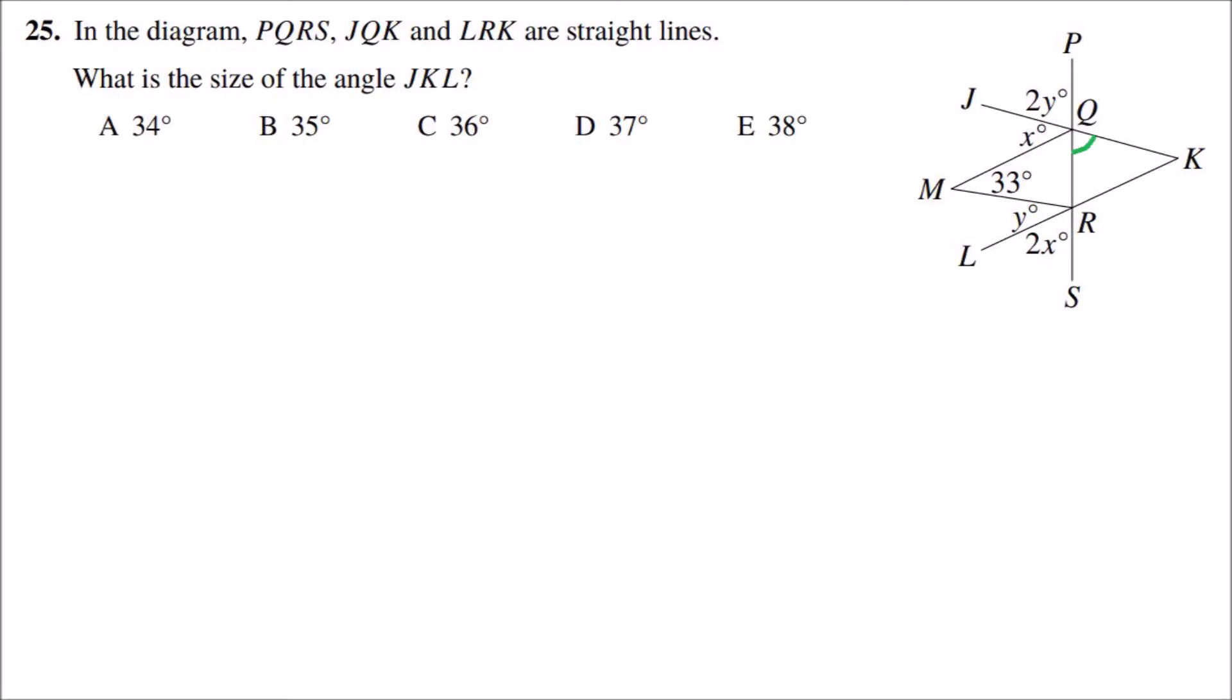Now because vertically opposite angles are equal, that means the angle KQR will be the same as angle PQJ which is 2y, and the angle KRQ will be the same as angle SRL which is 2x.